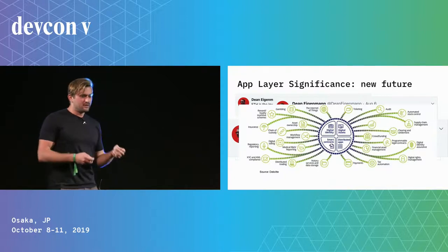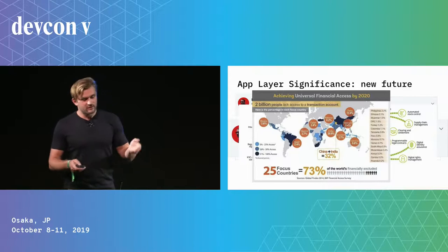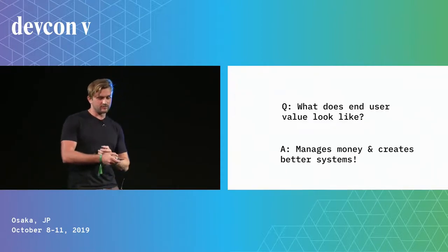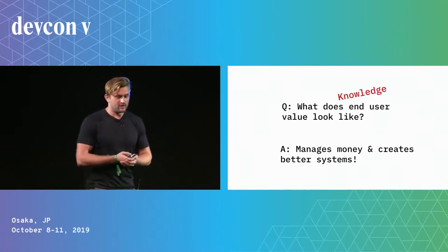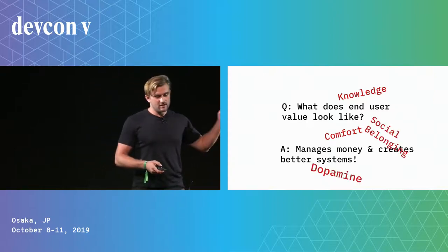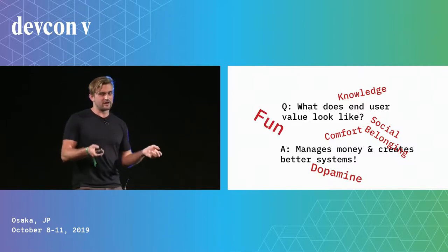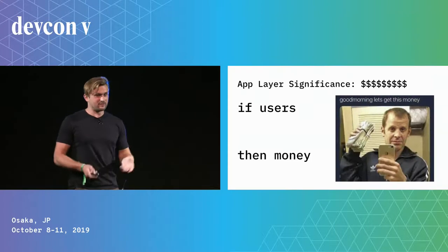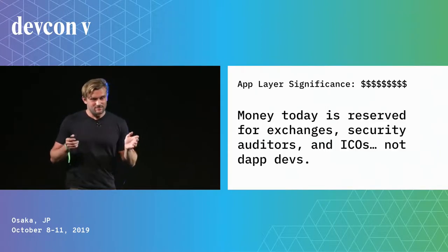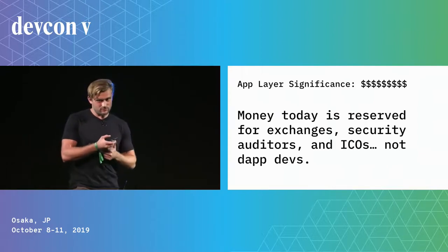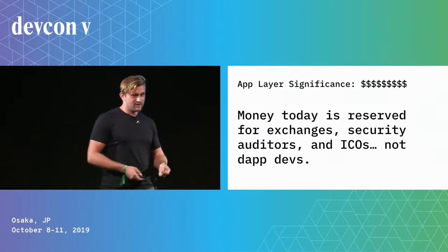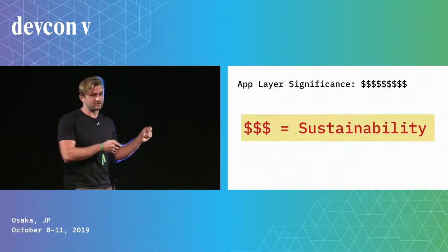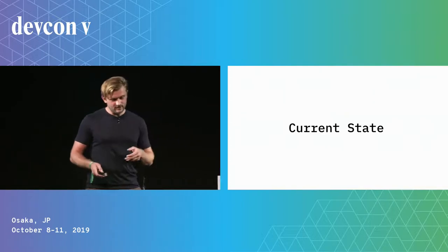A lot of ICOs in 2017 were very serious about inventing new business models around blockchain and an immutable ledger system to solve real-world problems. We also have the potential to bank the unbanked. If we gain adoption we can create better systems — ones that make money, provide knowledge, comfort, social belonging, or dopamine to the end user. For developers, getting users means you can actually make money, which is huge, since today revenue is really reserved for exchanges and consultants.